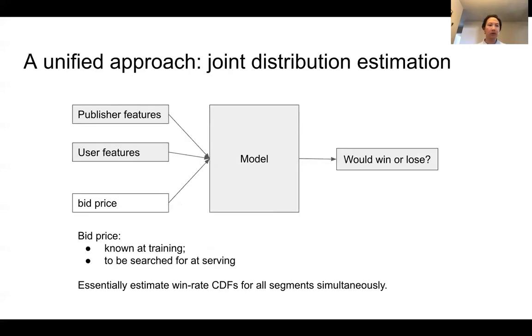In this paper, we propose a unified approach that takes advantages from both of these approaches. Similar to the machine learning approach, we build a classification model. However, we are not predicting the optimal shading factor. Instead, we are predicting whether we are going to win or lose.